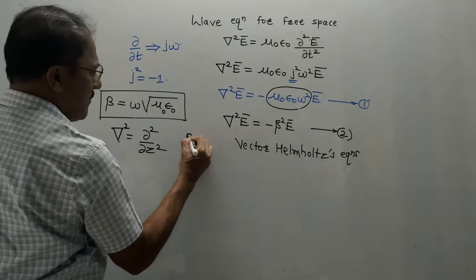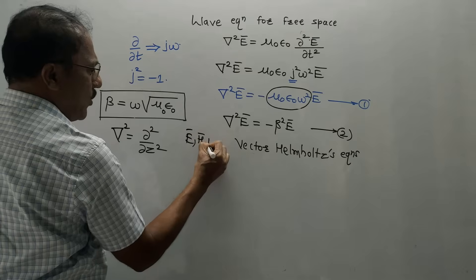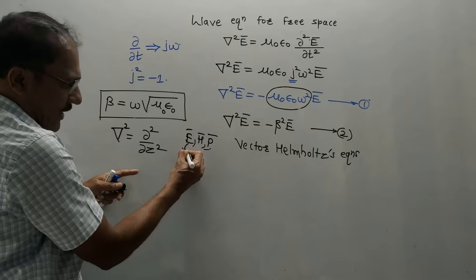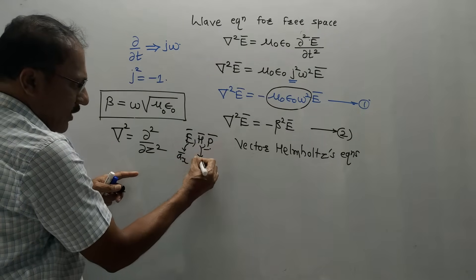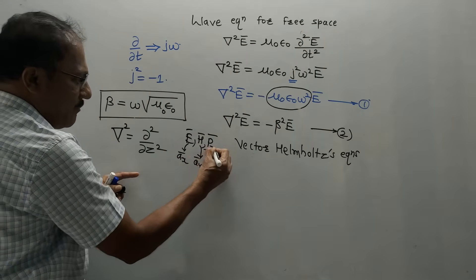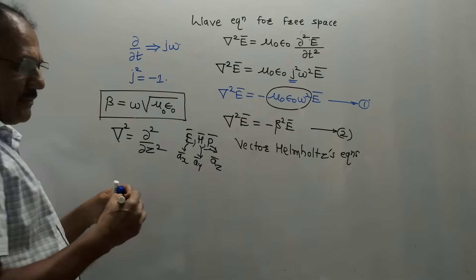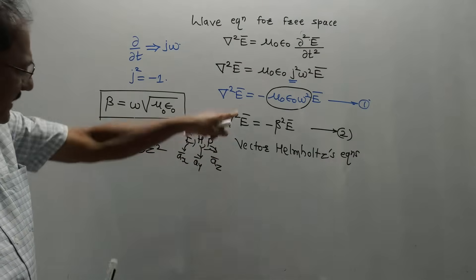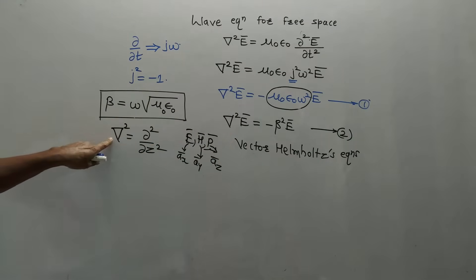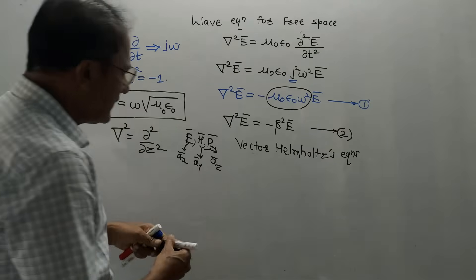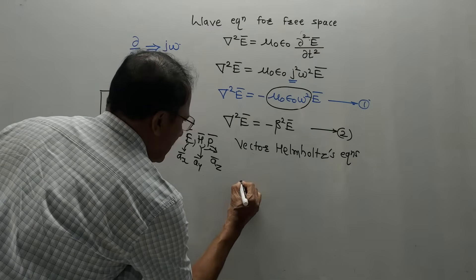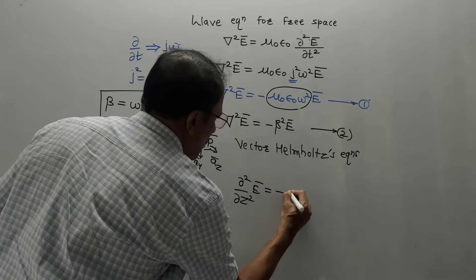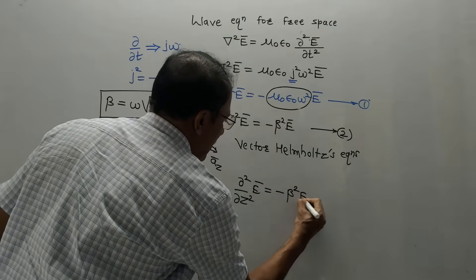There are three components: E-bar, H-bar, and the power of the wave, all mutually perpendicular to each other. Let's say E-bar is along the x-axis (âx), H-bar along the y-axis (ây), and P-bar must be along the z-axis (âz). So if the wave power is along z only, del squared becomes ∂²/∂z². The equation becomes: ∂²E-bar/∂z² equals −β² · E-bar.